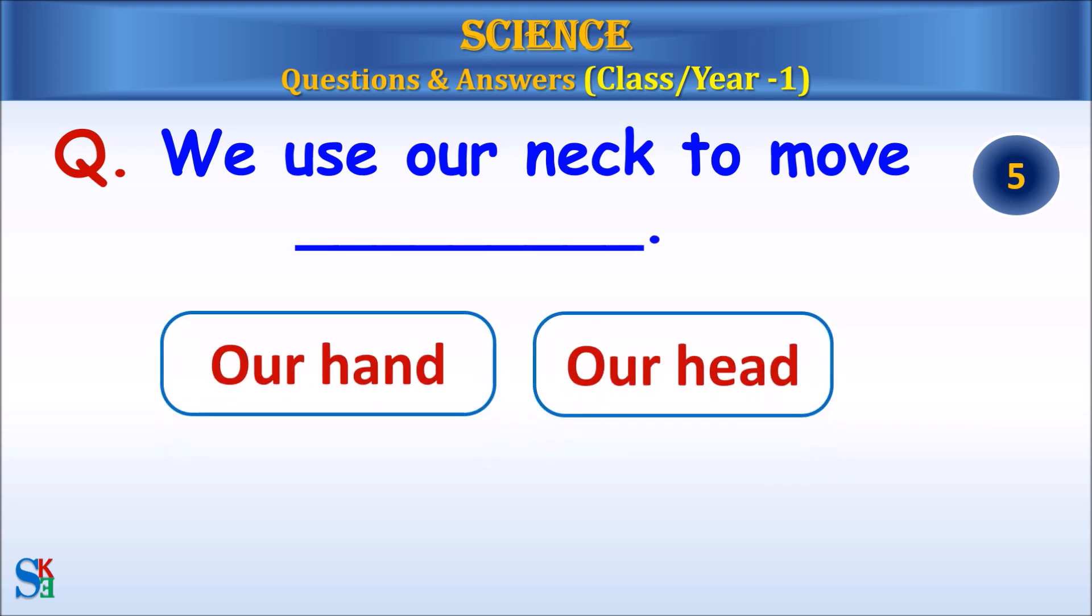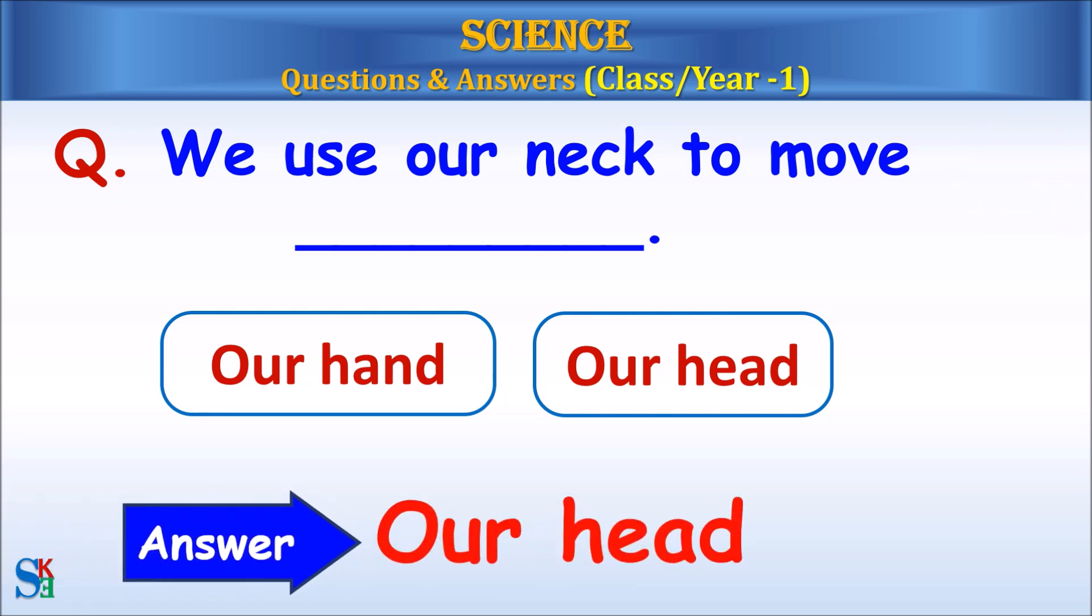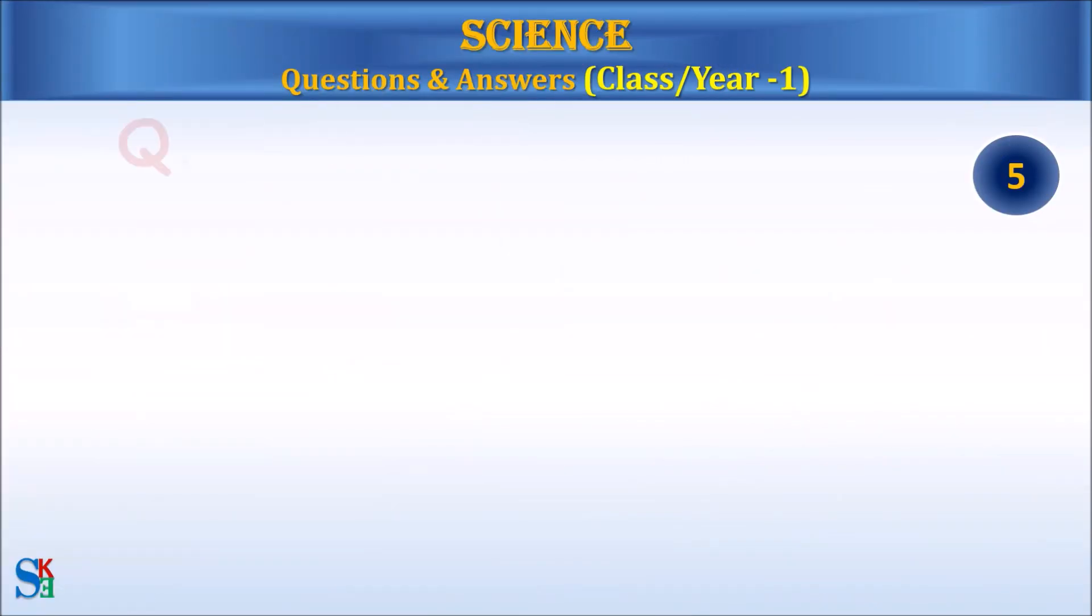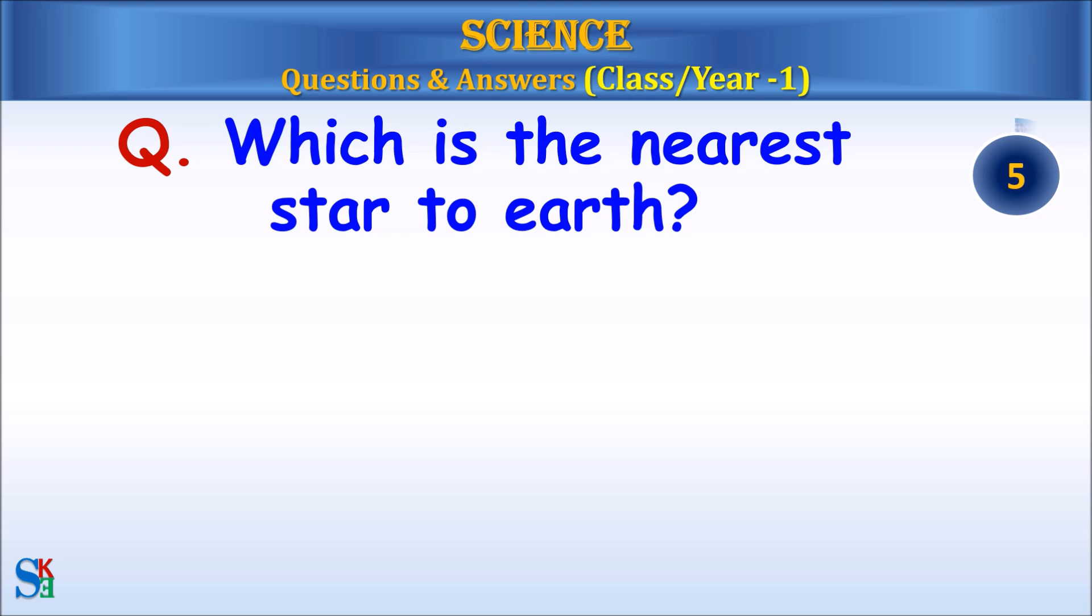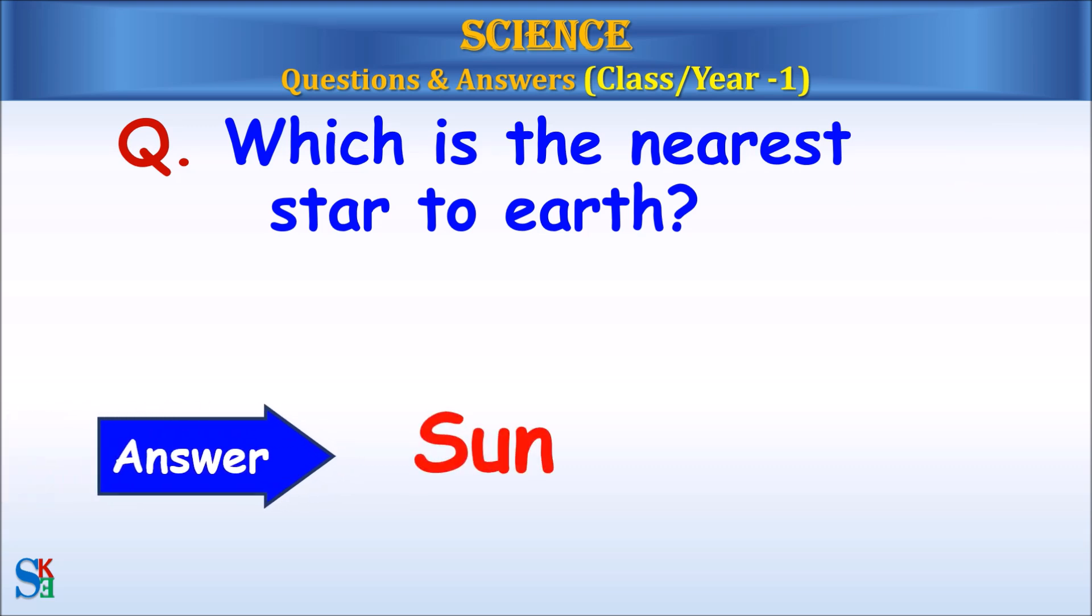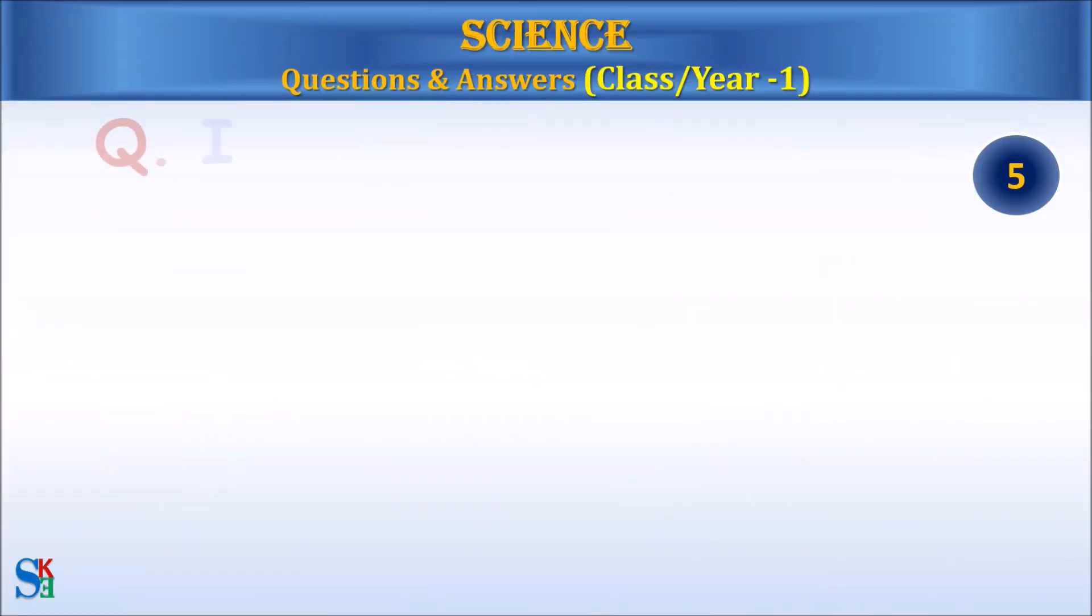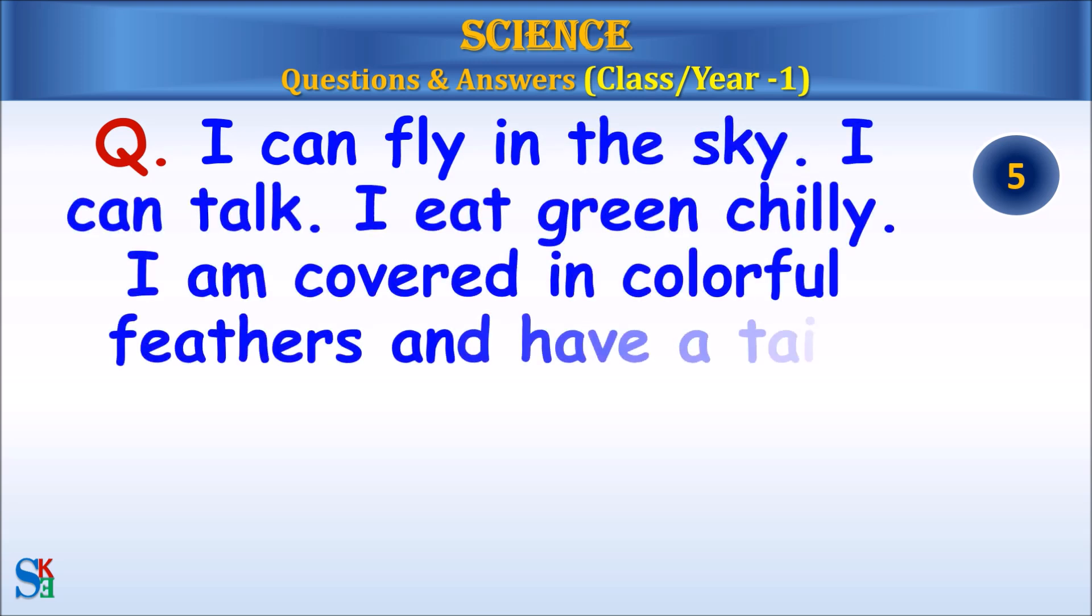We use our neck to move our hand or our head. Answer: our head. Which is the nearest star to earth? Answer: sun. I can fly in the sky. I can talk. I eat green chili. I am covered in colorful feathers and have a tail. What am I? Answer: parrot.